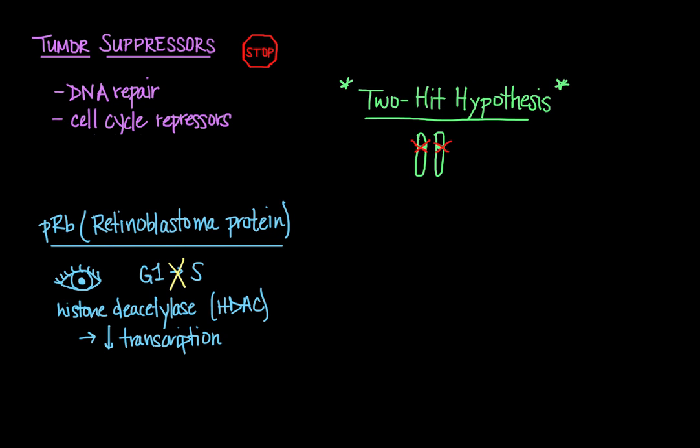Another very well-known tumor suppressor protein is the P53 protein. Homozygous loss of this protein is found in up to 65% of colon cancers, 50% of lung cancer, and also in breast cancers. So this is clearly a very critical tumor suppressor protein.